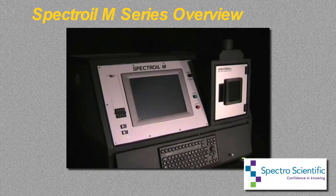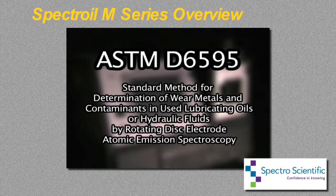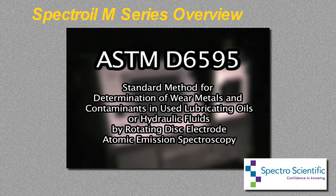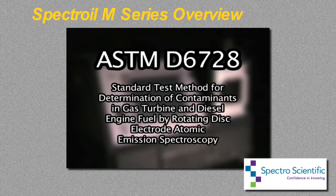For used oil analysis, it fulfills the requirements of ASTM D6595, standard method for determination of wear metals and contaminants in used lubricating oils or hydraulic fluids by rotating disk electrode atomic emission spectroscopy. And for fuel analysis, it meets the requirements of ASTM D6728, standard test method for determination of contaminants in gas turbine and diesel engine fuel by rotating disk electrode atomic emission spectroscopy.